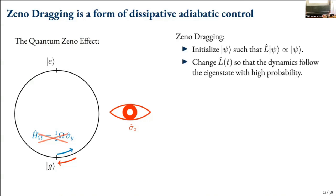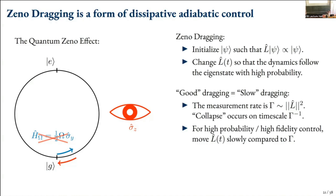The idea of Zeno dragging is that if we initialize our state as an eigenstate of some particular measurement operator, and then very slowly change that measurement operator so the system dynamics follows the eigenstate with high probability, we would be able to drag the system up. However, good dragging means slow. With measurement rate gamma approximately equal to the norm of the emission operator squared, collapse occurs on timescale gamma^{-1}. For high probability and high fidelity control via dragging, you must move the measurement axis very slowly compared to the measurement strength.